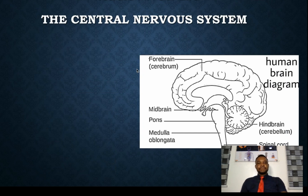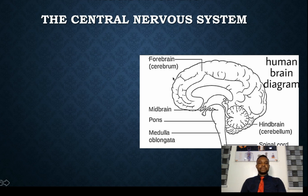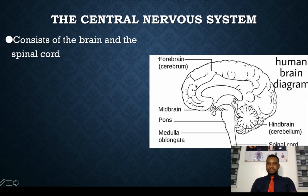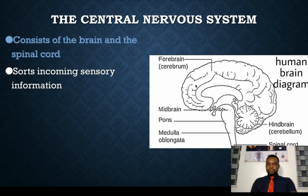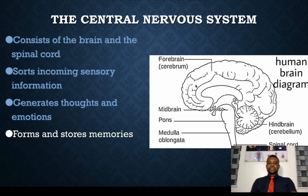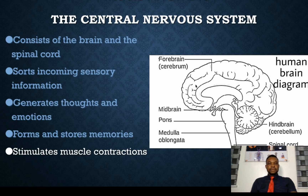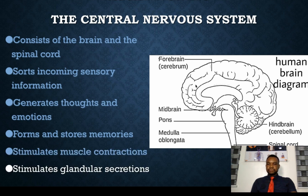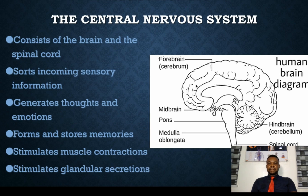Now the central nervous system. The central nervous system is made up of the brain and the spinal cord. This is a diagram of the brain and the spinal cord. The central nervous system sorts incoming sensory information through the special senses, generates thoughts, emotions, and stored memory. These are general functions of the brain. It also stimulates glandular secretion.